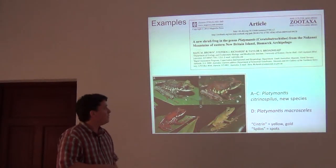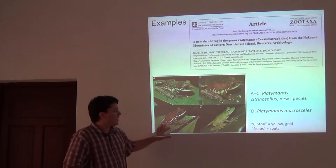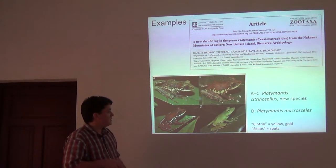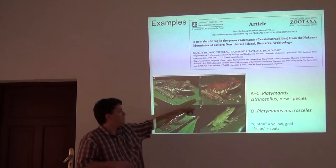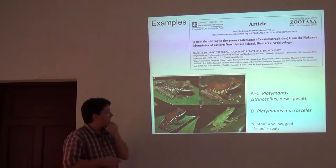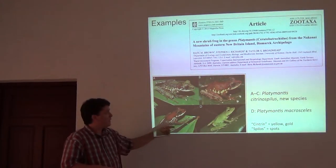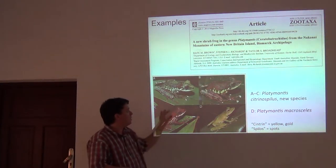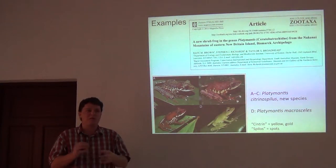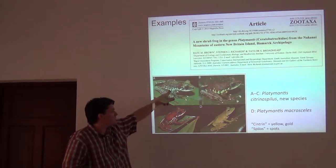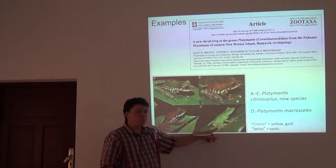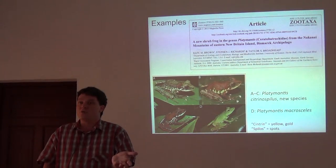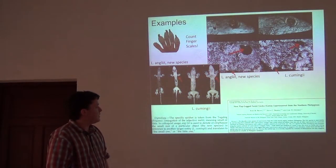Here's a simple example — a frog we named Platymantis citrinospilus: citrin means yellow and spilus means spots. These are the new species, and I like this because it shows a wide range of variation. These things have giant spots and these ones have little ones, but across our whole sample these frogs were all reddish-brown with various sizes of yellow spots on their flanks. The previously described species was just solid green. Those are really simple things that you can see with the eye and show the reader just with photographs.